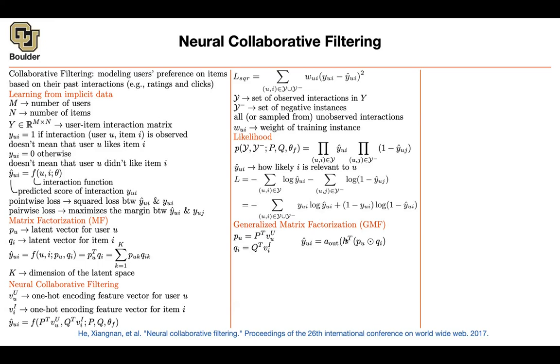But you can have more flexibility here. You can set h to be a learnable parameter and a_out to be a function. If a_out is identity, h is a bunch of ones. You are back to matrix factorization.